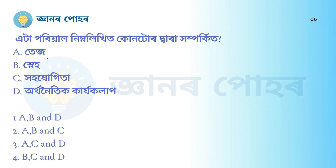Option A: Blood relation (tase). Option B: Affection (sneh). Option C: Care and concern (koha, joheta). Option D: Economic activities (arthonotic karyokala).